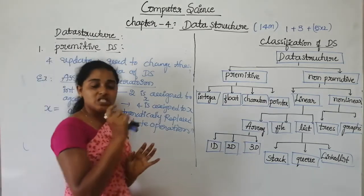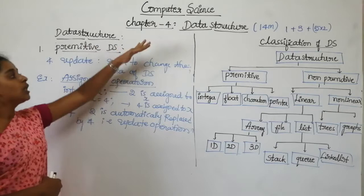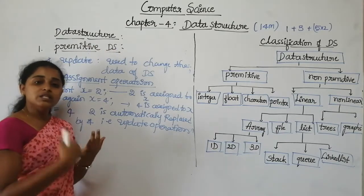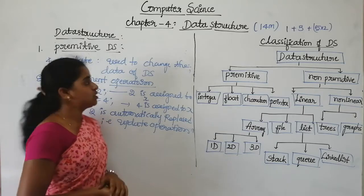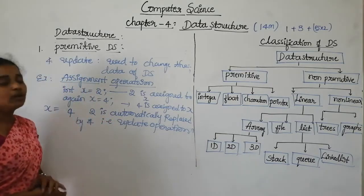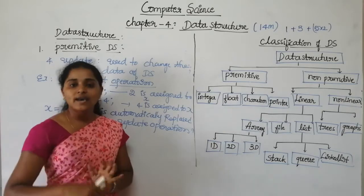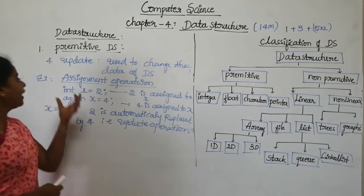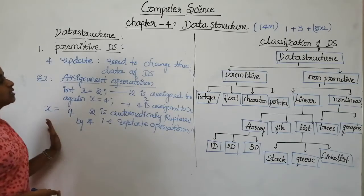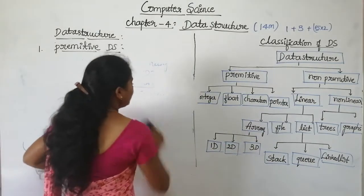The data structures which can be directly operated by the machine level instruction are called primitive data structures. There are four main operations performed on primitive data structure: create, which creates new data structures; destroy, which removes data structures from memory; select, which is used by the programmer to access the data; and update, which is used to change the data of the data structure.